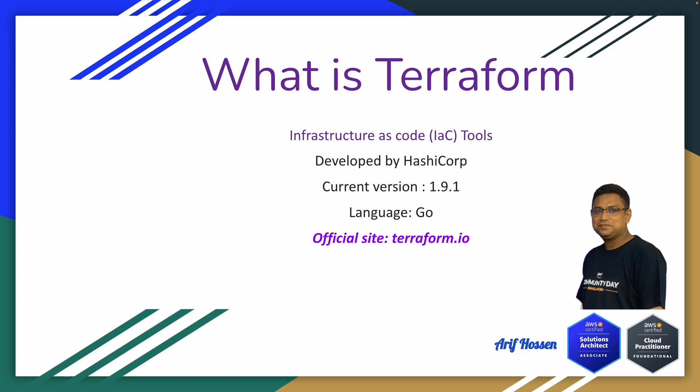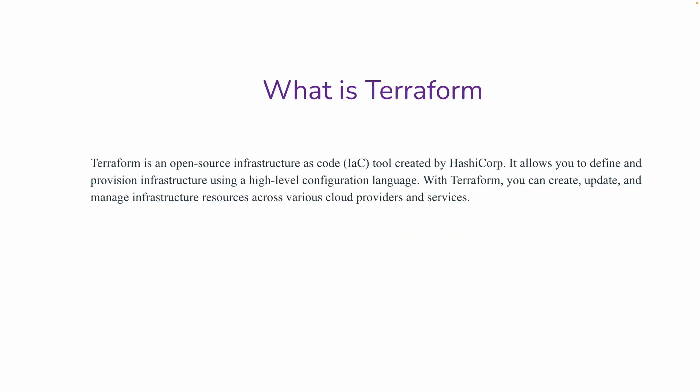What is Terraform? Terraform is an infrastructure as code (IaC) tool developed by HashiCorp. The current version is 1.49.1, the development language is Go, and the official site is terraform.io. Terraform is an open source infrastructure as code tool that allows you to define and provision infrastructure using a high-level configuration language. With Terraform you can create, update, and manage infrastructure resources across various cloud providers and services.